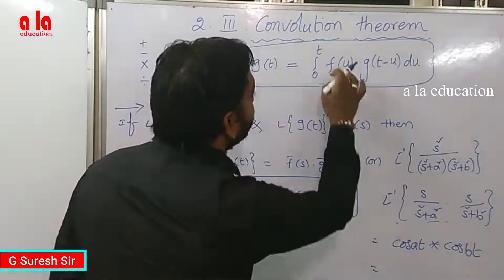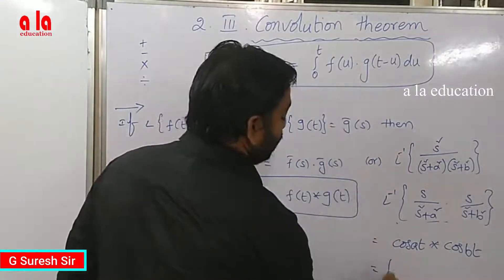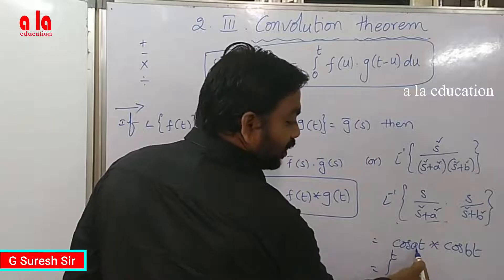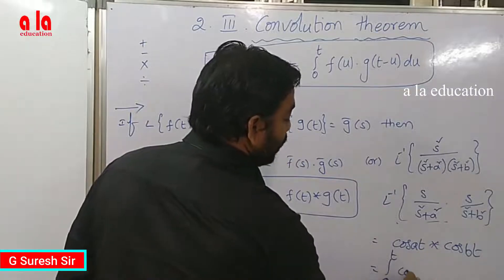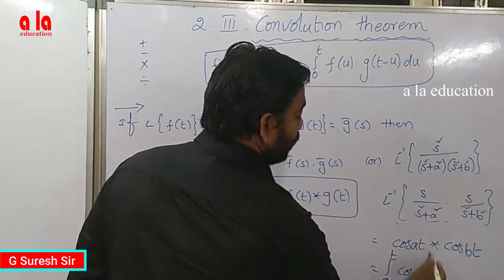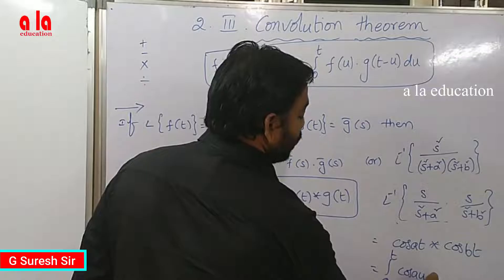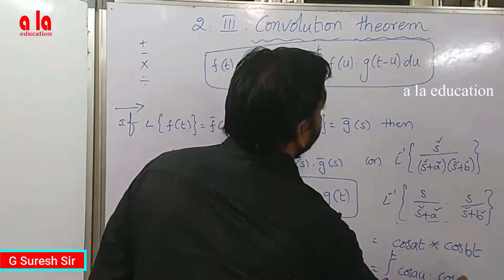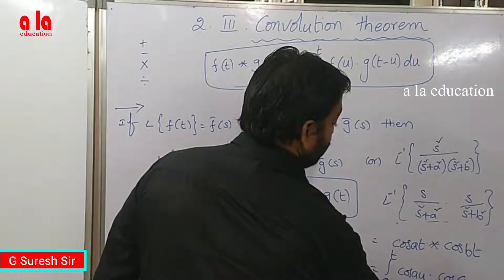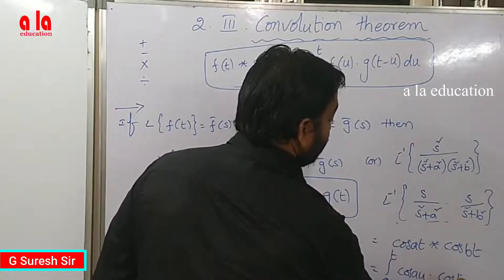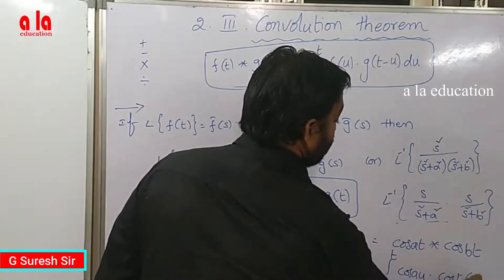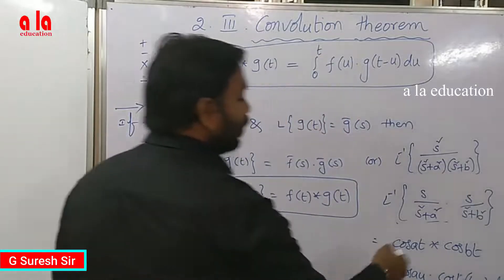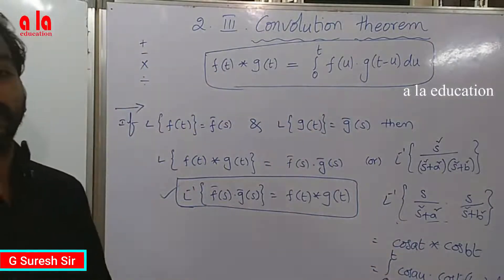The convolution product of cos(at) and cos(bt) is equal to the integral from 0 to t of the first function in terms of u — that is cos(au) — into the second function in terms of t minus u — that is cos(b(t minus u)) — du. Now, after the final integration, we get the answer.